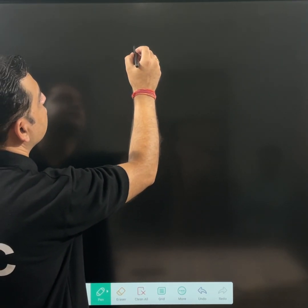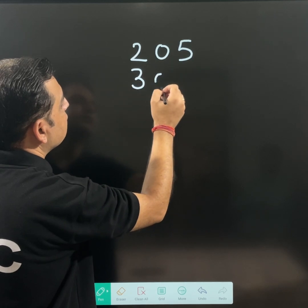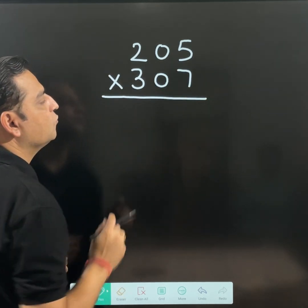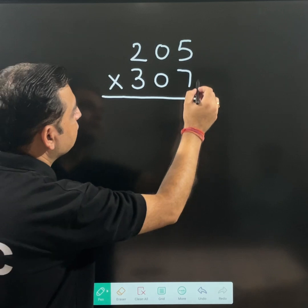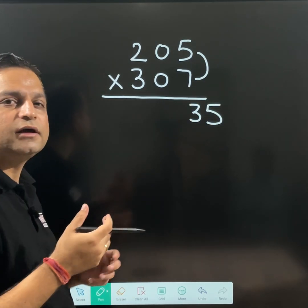For example, let us suppose you have 205 and 307. You will find it easy. 7 multiplied by 5 is 35. So at the end, I am writing 35. 3 multiplied by 2 is 6.